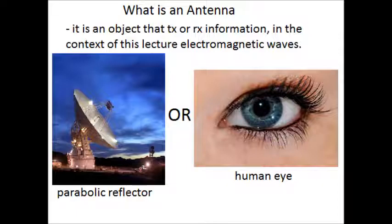Or on the right side, a more unorthodox antenna called the human eye. It receives electromagnetic radiation in the same fashion the parabolic reflector does, but it receives a higher frequency of the same radiation called visible light.